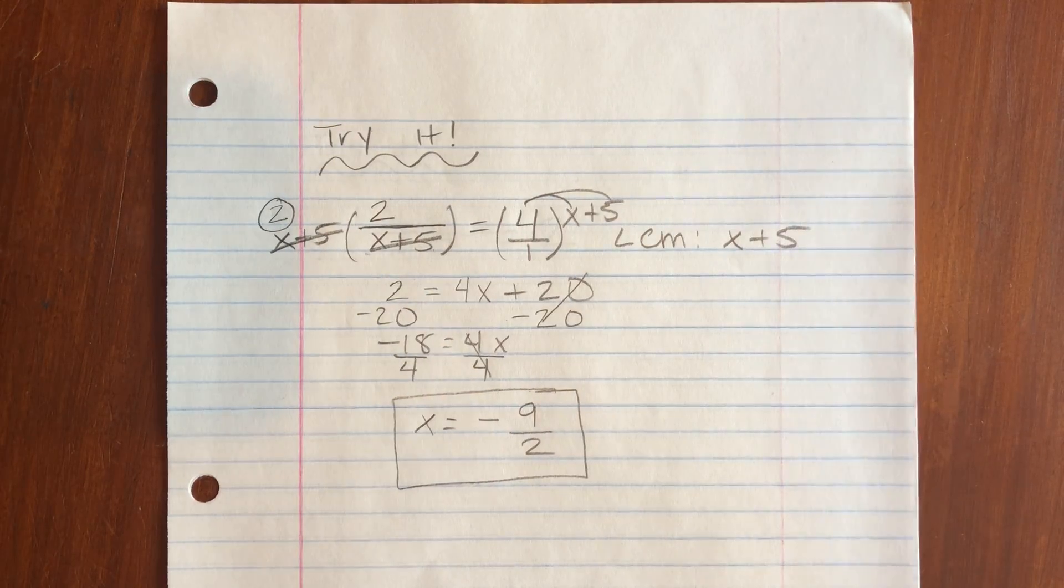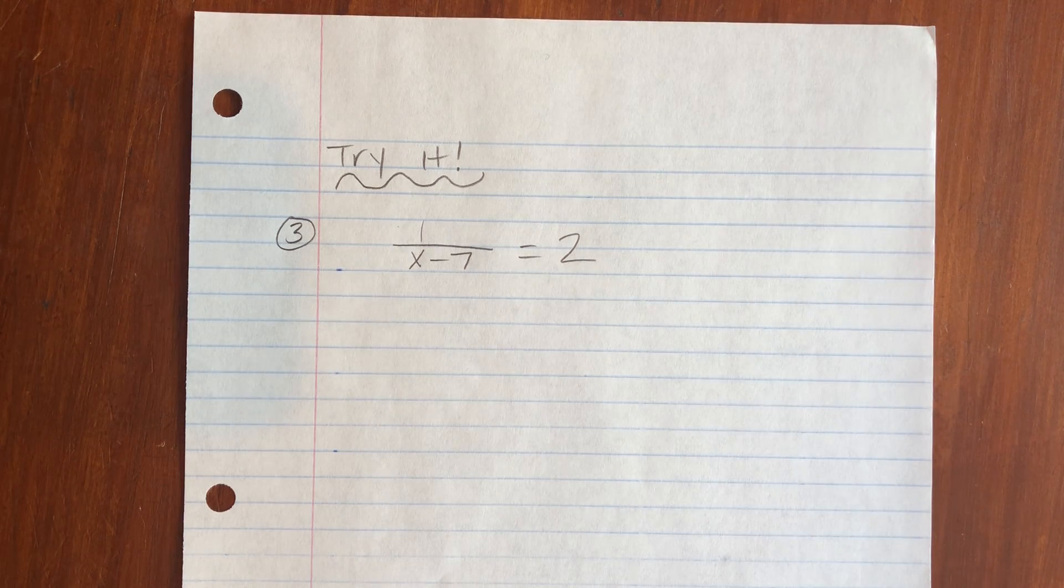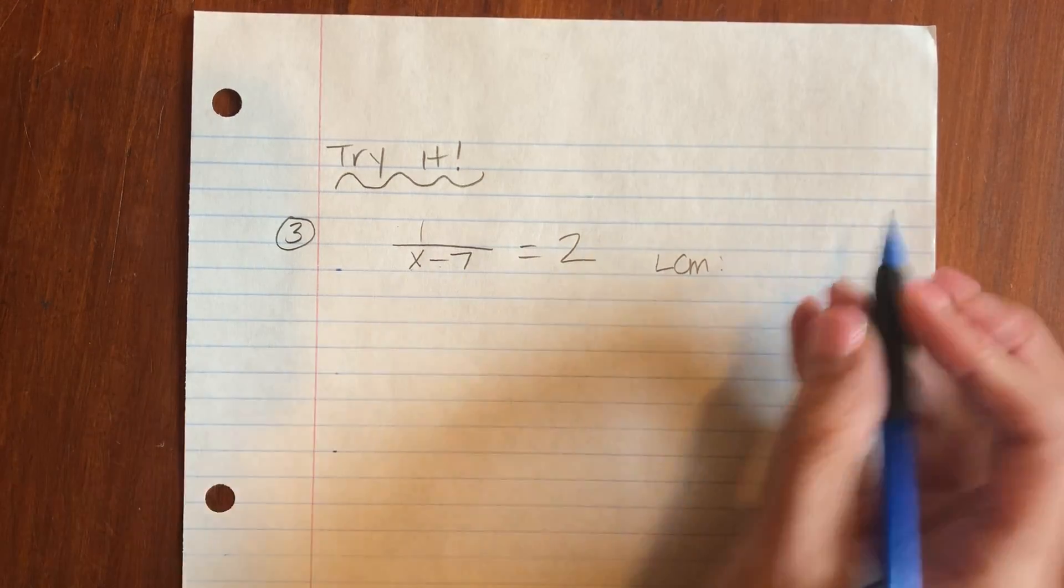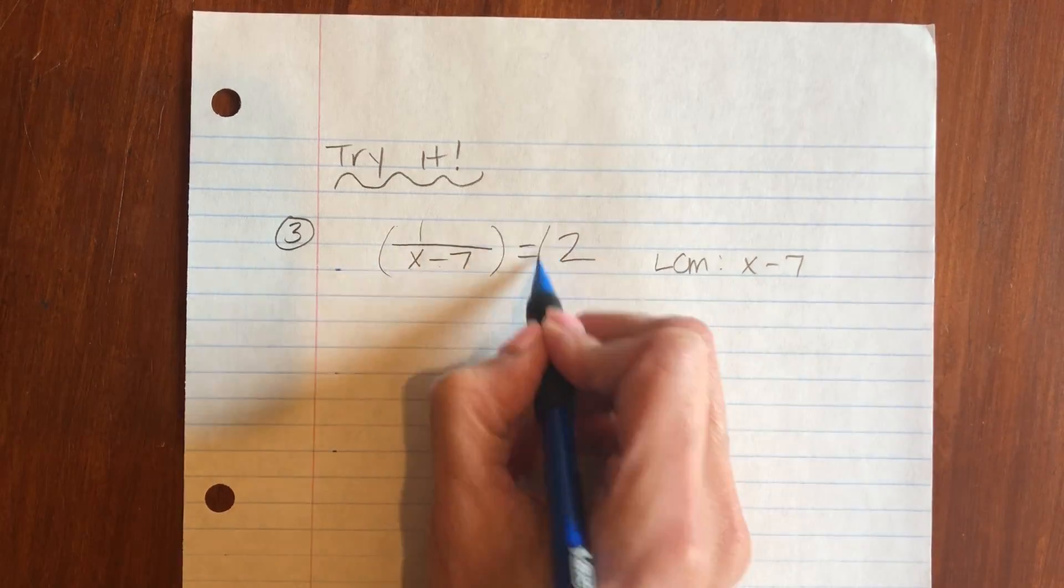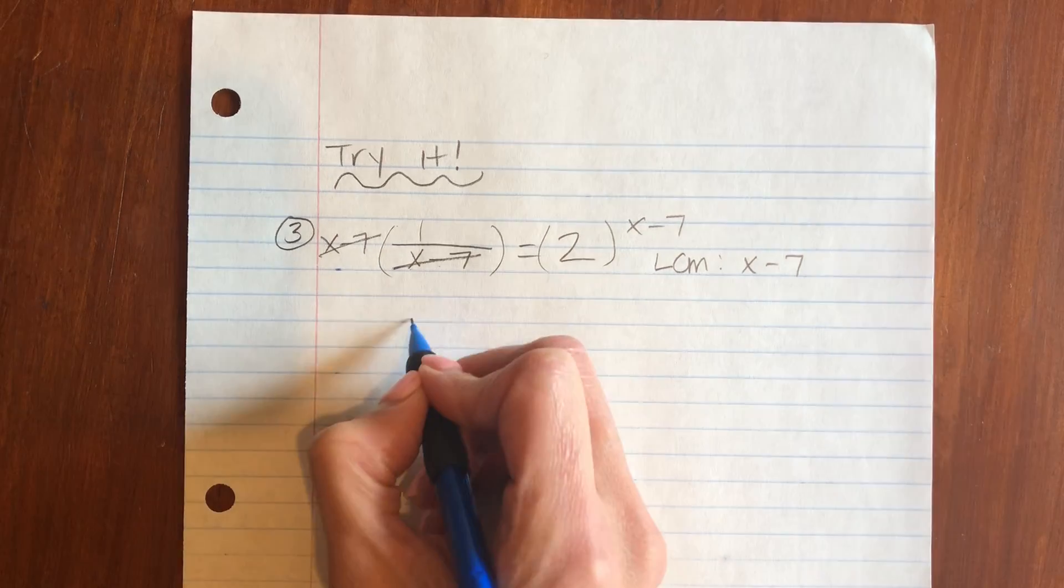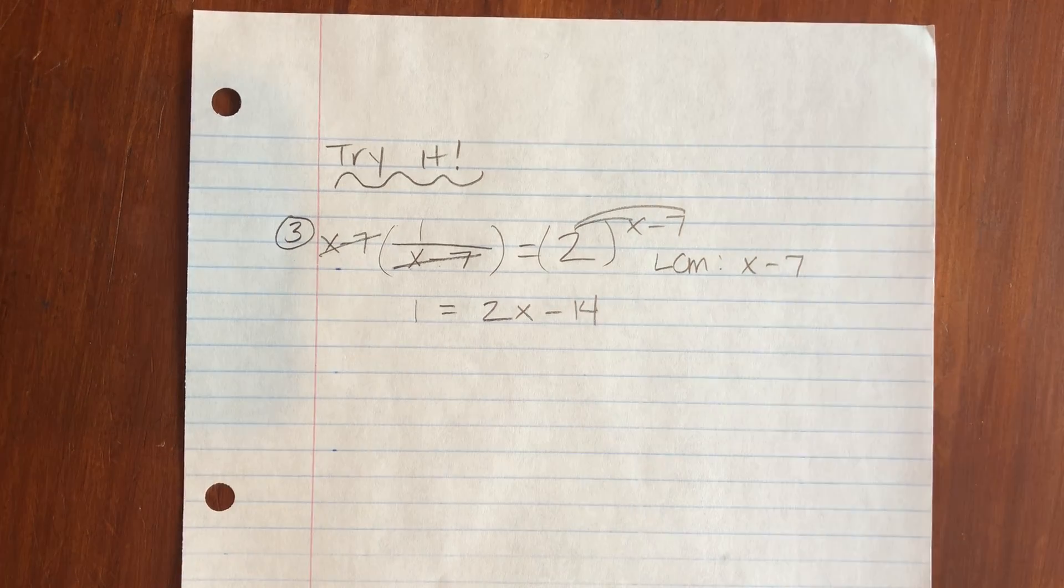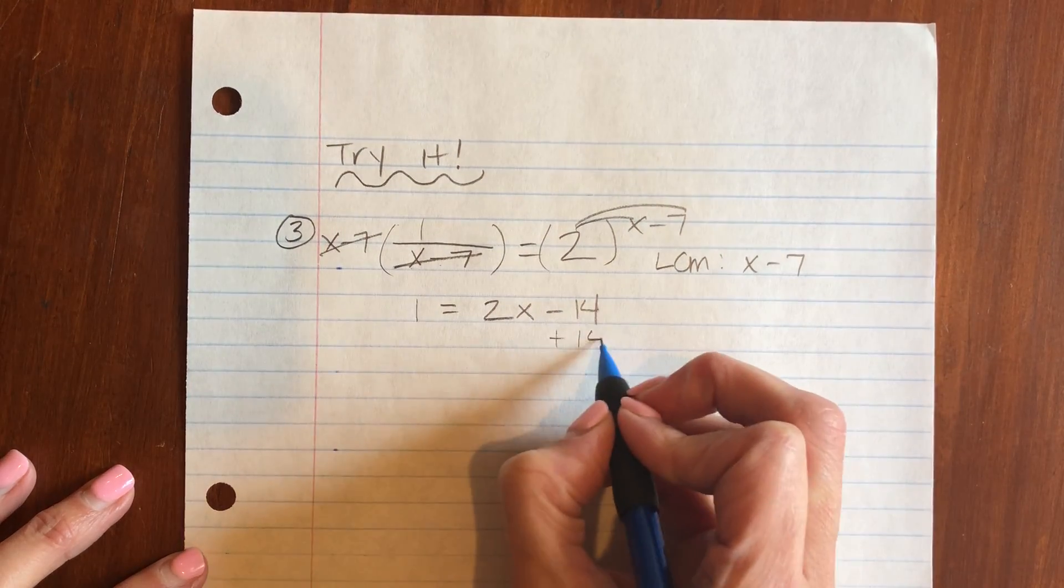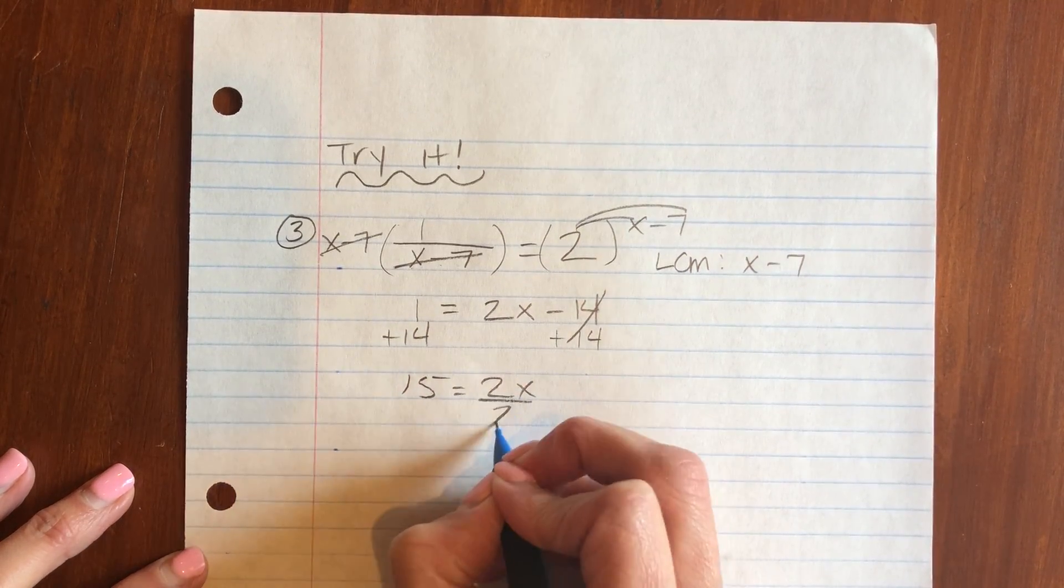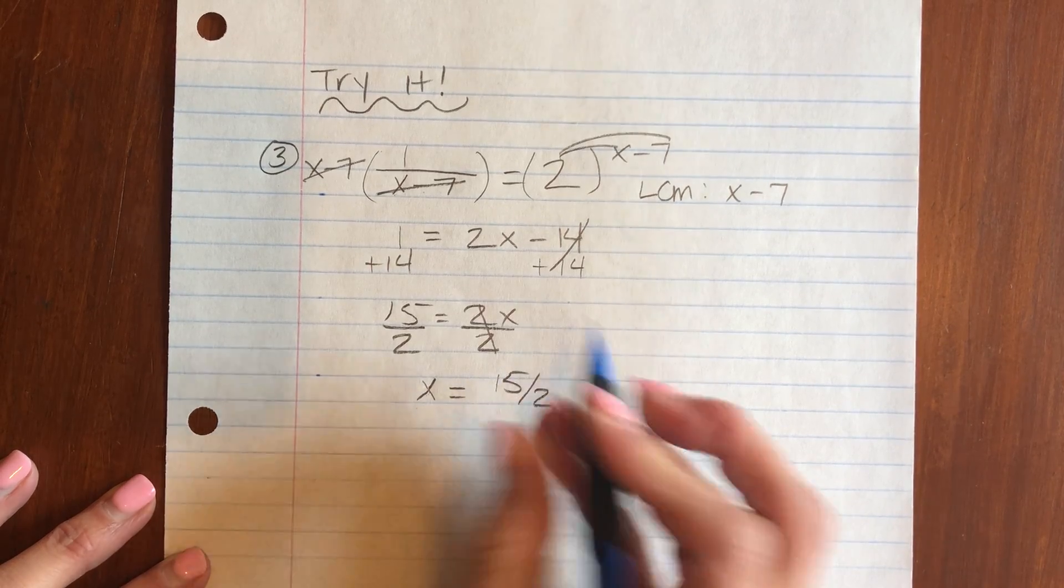One more, last one. Try that. So your LCM for this one is x minus 7. Multiply both sides by x minus 7. Those cancel out. Distribute the 2. And solve your two-step equation. Add the 14, and finally divide by 2. And you get x equals 15 over 2.